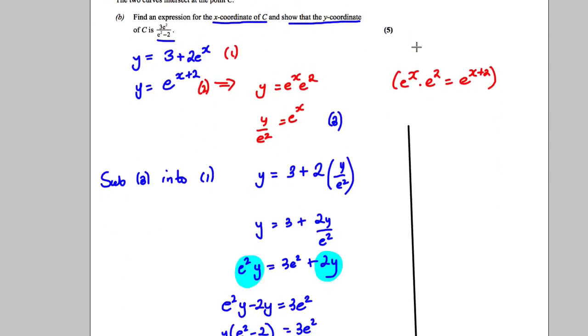And what I should have done is I should have realized that both equations were equal to y so I could have made them equal to each other straight away. So that might have been an easier route. So I would have said 3 + 2e^x is equal to e^(x+2).